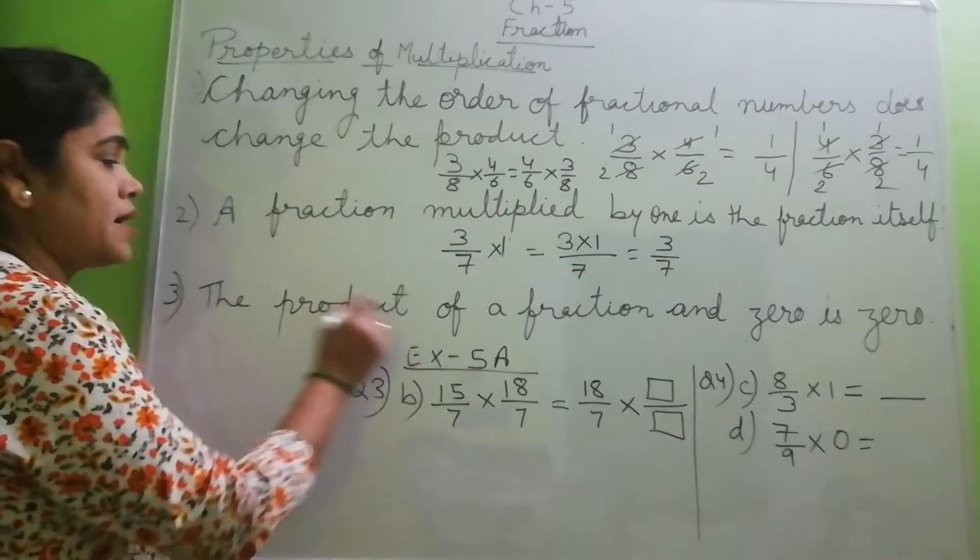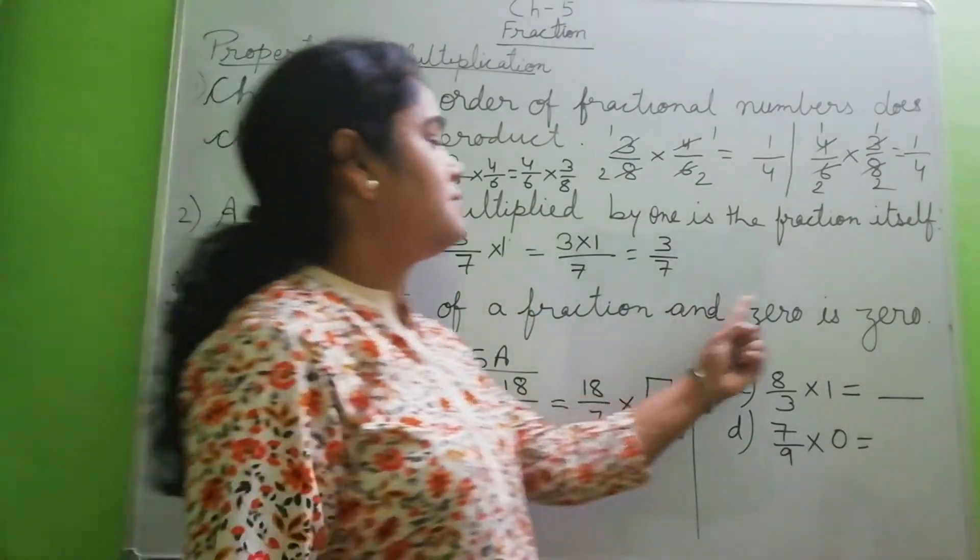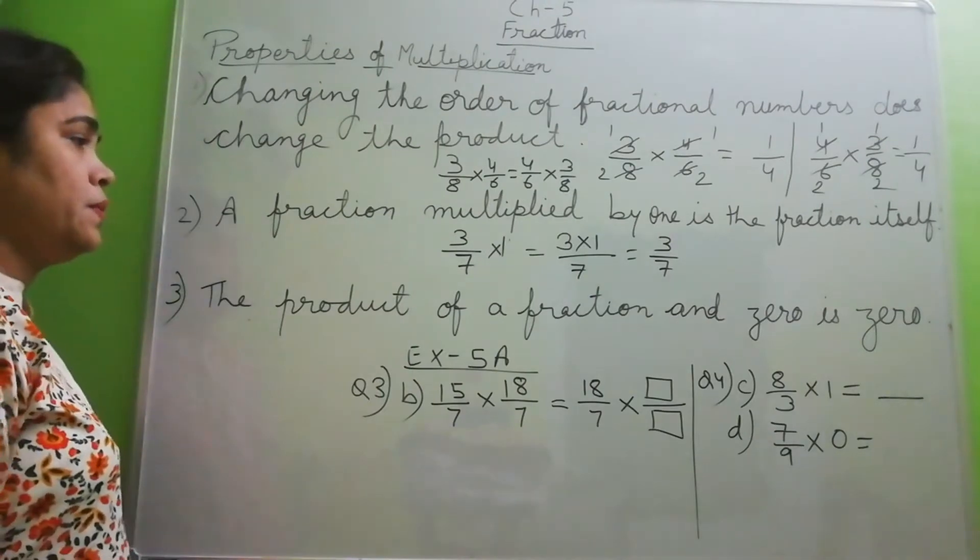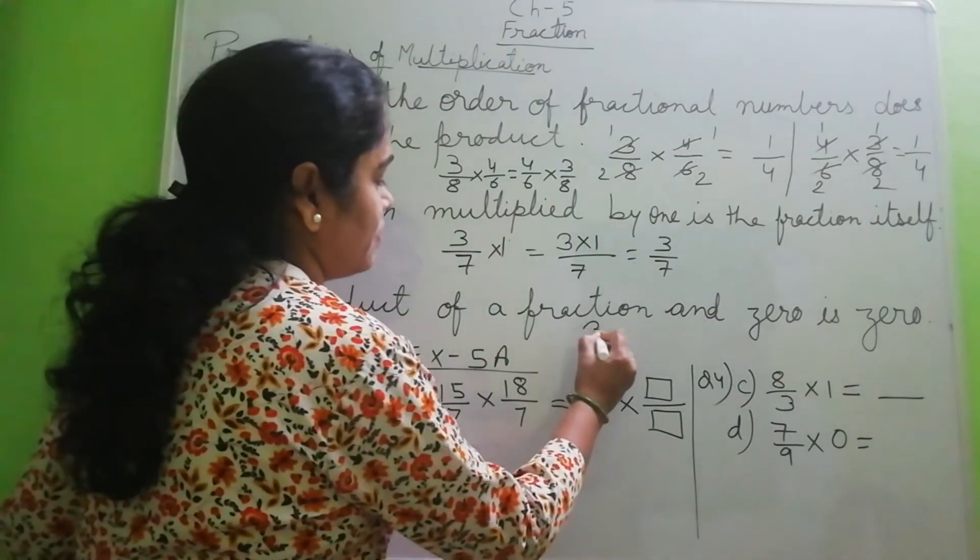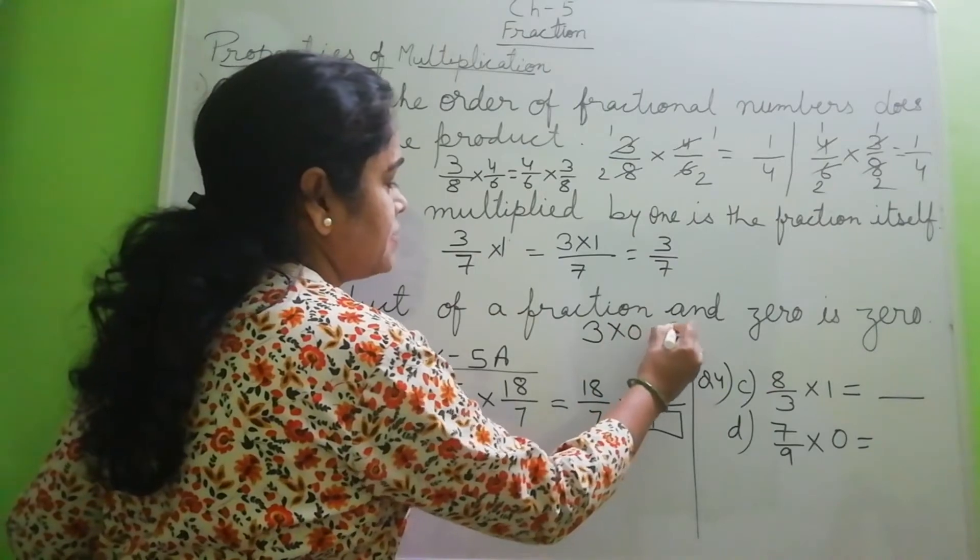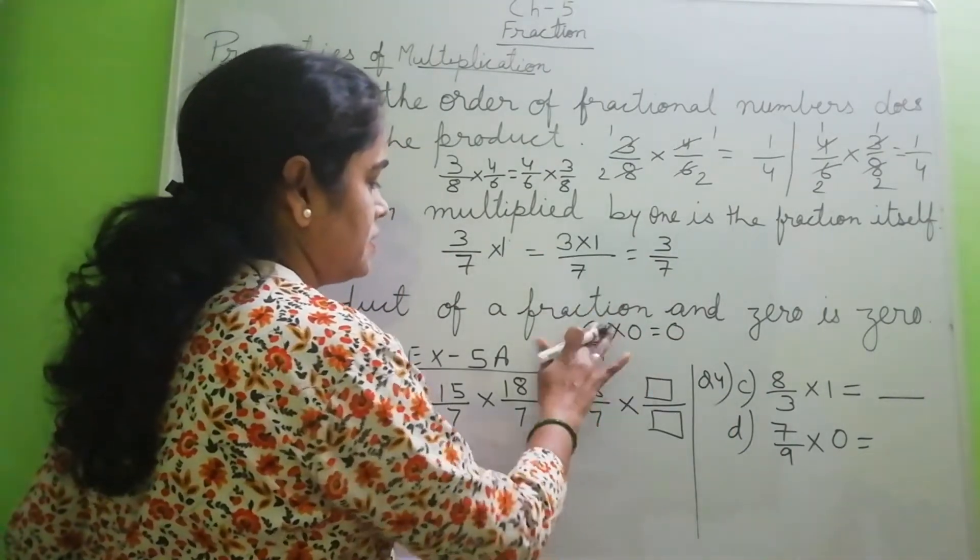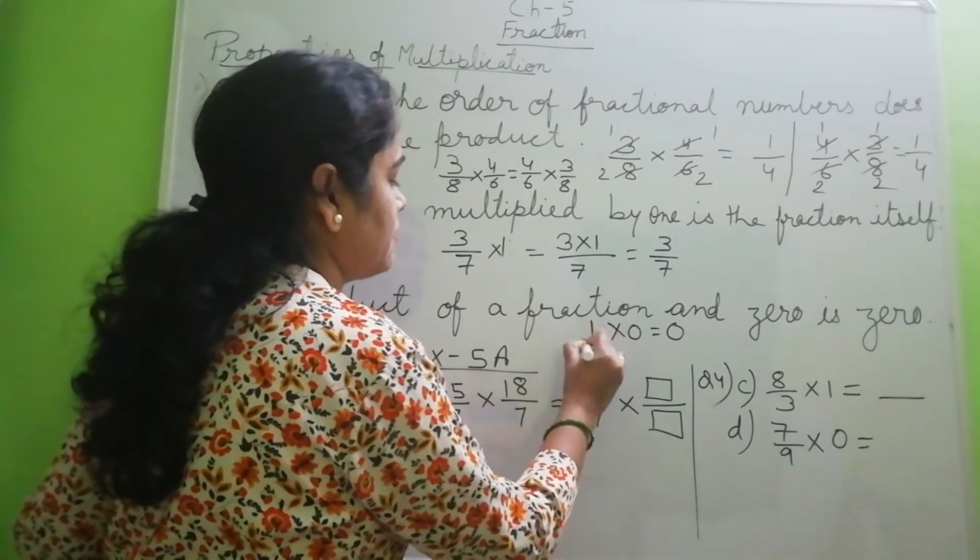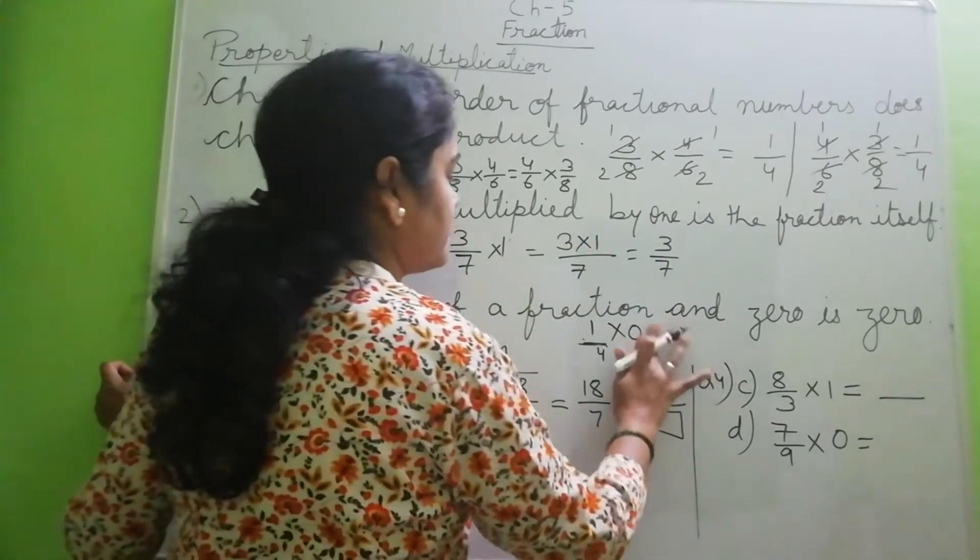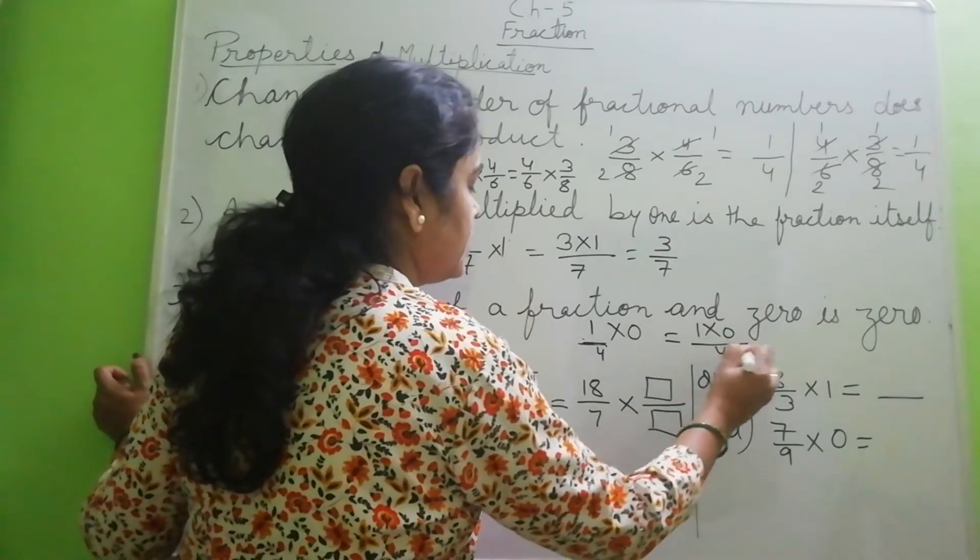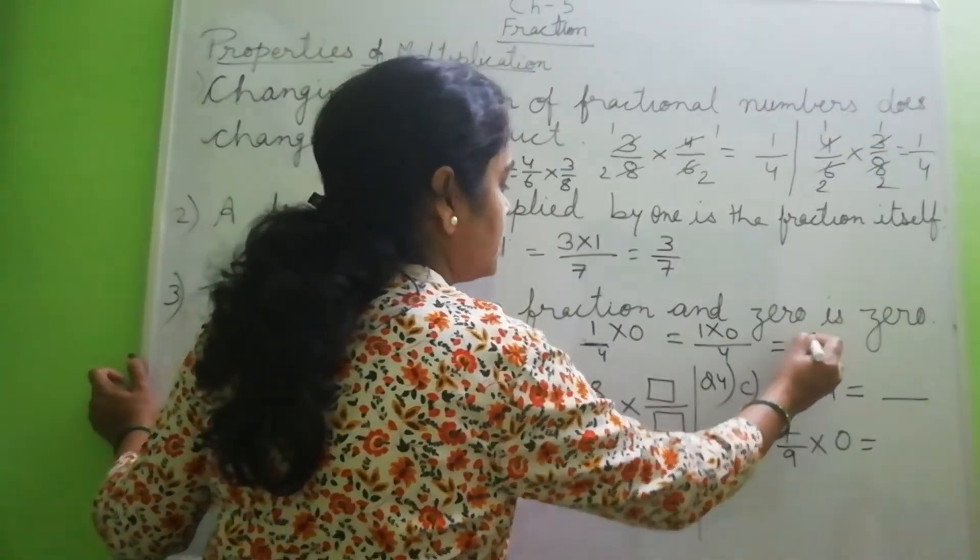Next is the product of a fraction and 0 is 0. For this, what do we do? Any number... we have learned any number multiplied by 0 is 0. Similarly, if we multiply any fraction, suppose it is 1 by 4 by 0, what happens? The numerators get multiplied and denominator is same. So it is 0.